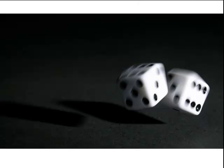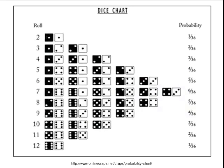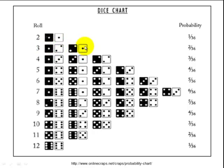Let's look at another example: rolling a pair of dice. The experiment is rolling the dice and looking at the numbers on top. Here's the sample space — we have 36 different outcomes. If we sum the numbers on top, the sum ranges from 2 to 12. A sum of 2 is a simple event because it can only happen one way. A sum of 3 is not a simple event because it can happen two ways. A sum of 4 can happen three different ways.